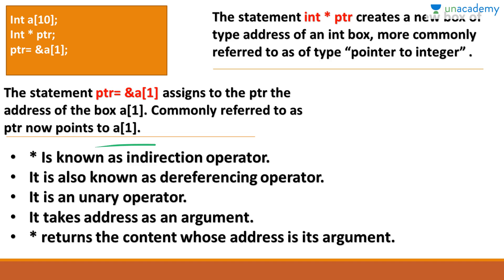There are a few points related to this. Asterisk (*) is known as the indirection operator. It is also known as the dereferencing operator and it is a unary operator. The address-of operator (&) is also a unary operator. It takes an address as an argument, and asterisk (*) returns the content whose address is its argument.